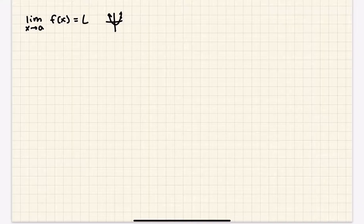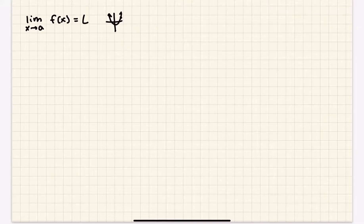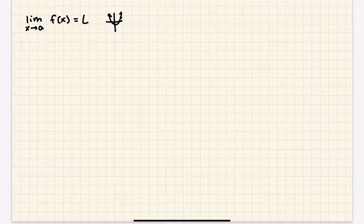Intuitively speaking, on each side, what value does the function approach? You can also do it with a table — you're given x values close to the a value, let's say 2 again, you're given 1.9, 1.99, and so on. You're given the function values at those points, and you can see if they meet together at a certain point. If so, that point is the limit L.